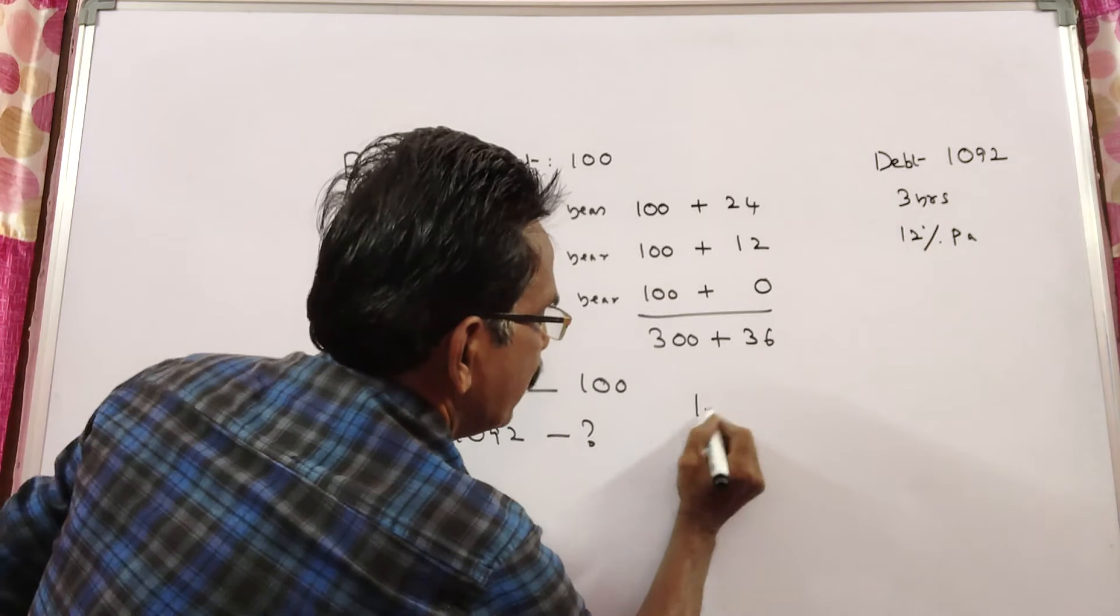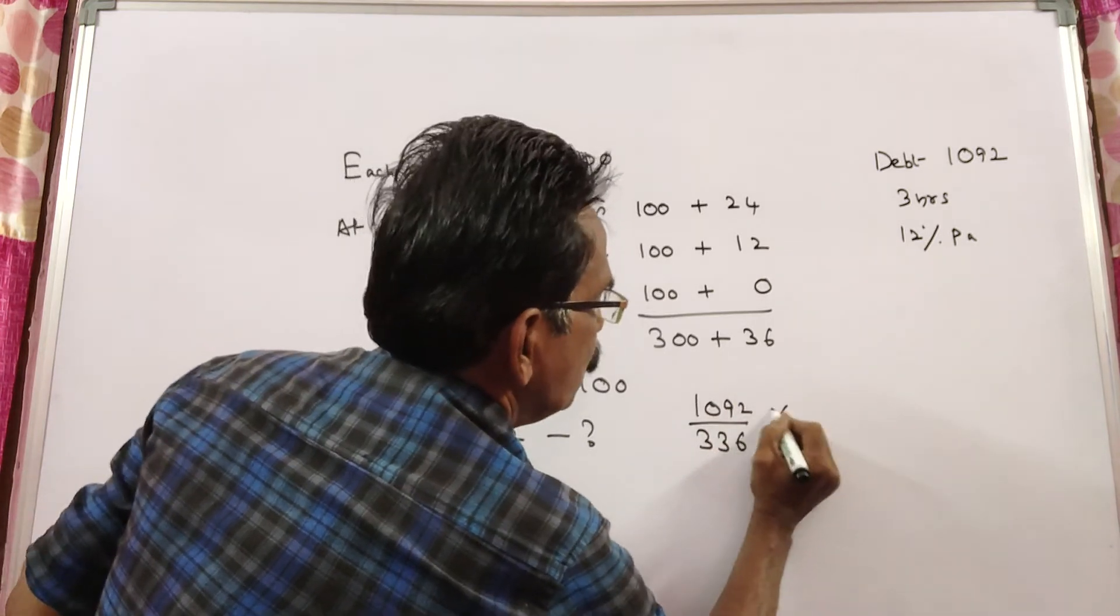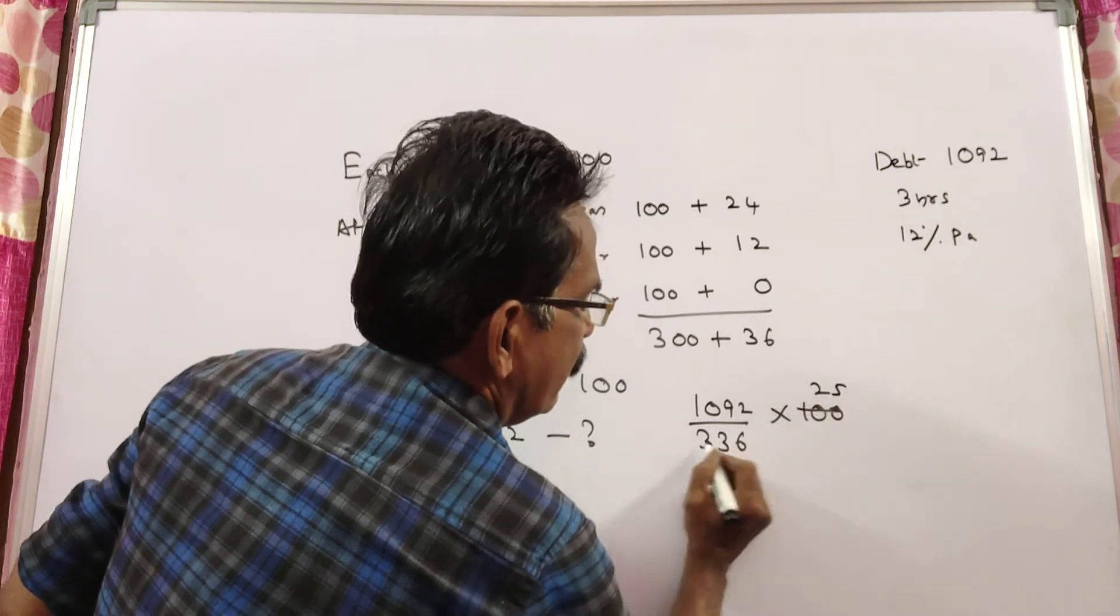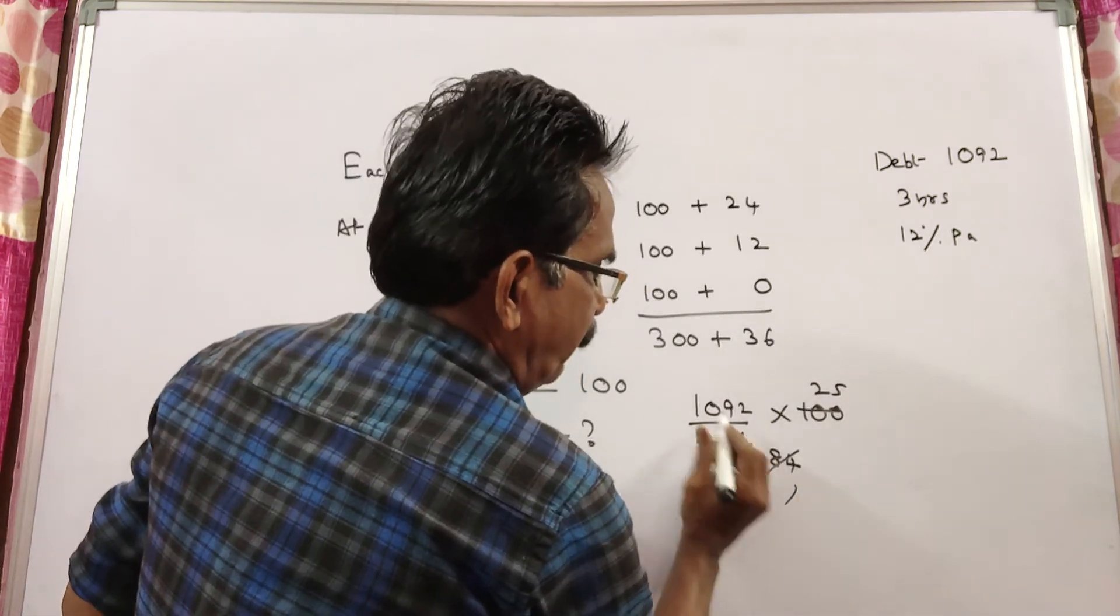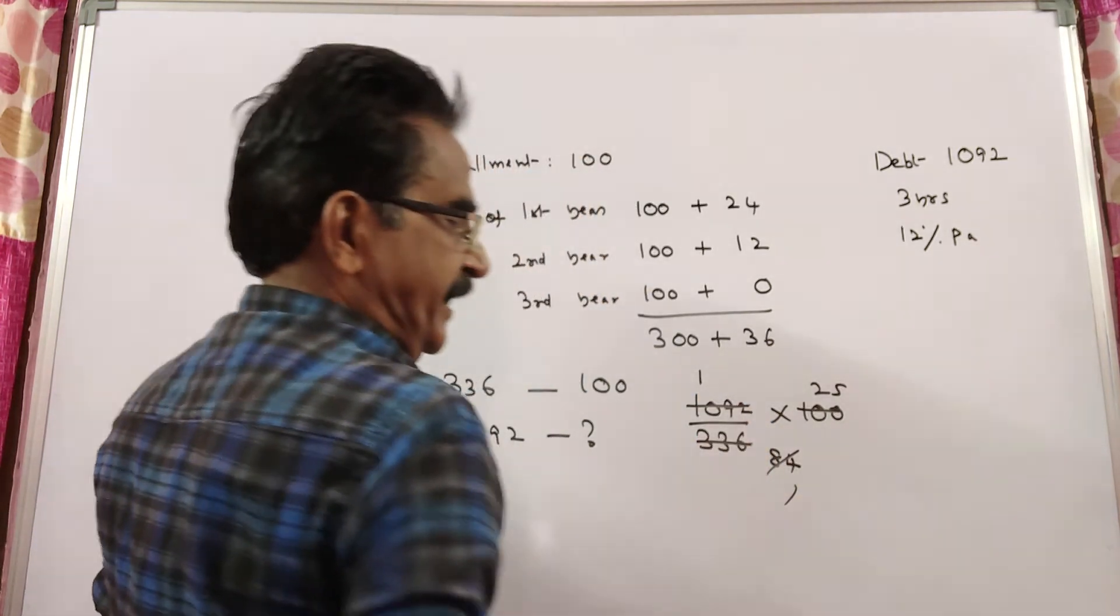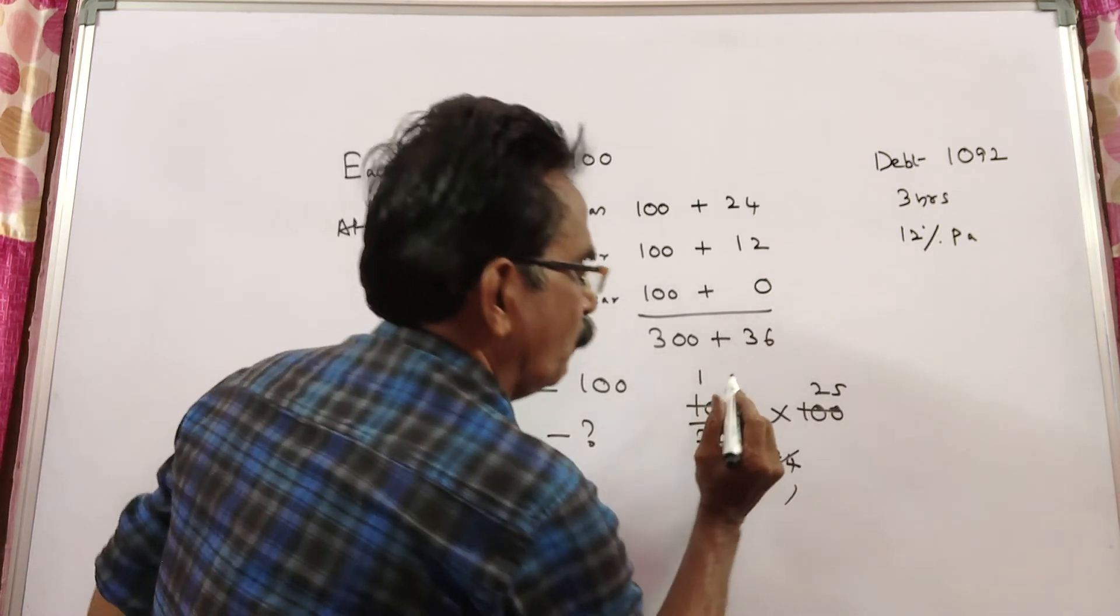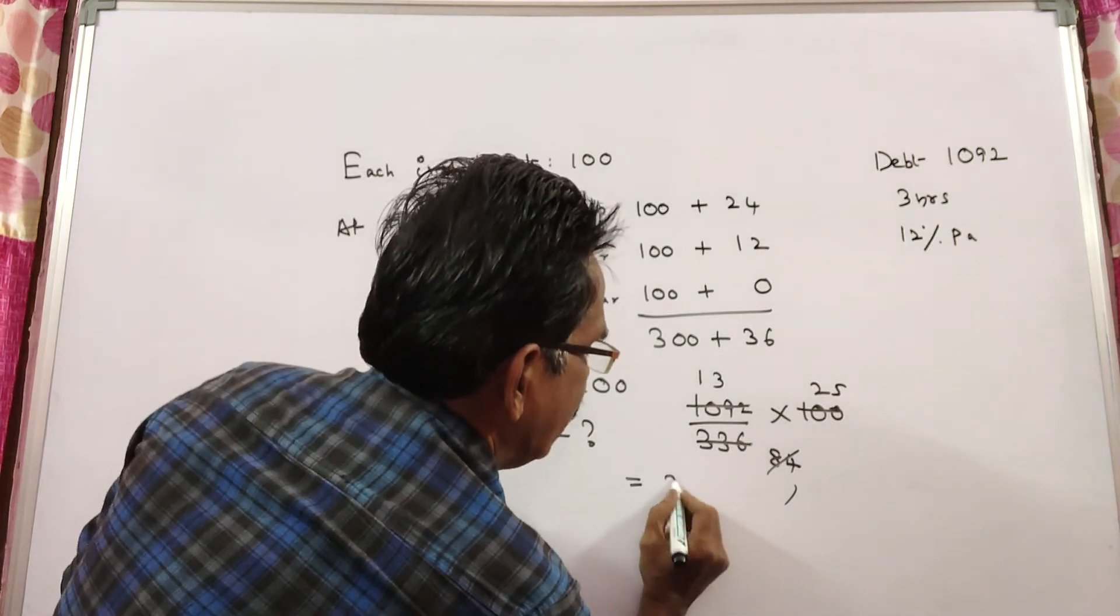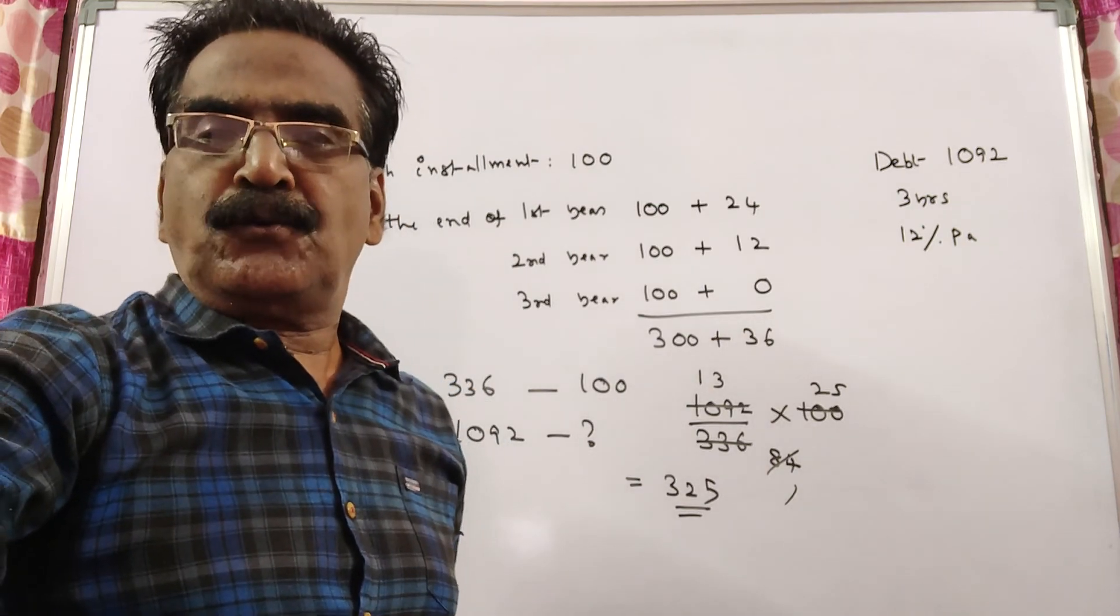Calculating: for 25's, for 8's, for 4's... 84 into 1 is 84. Remaining 16 plus 25 is 252. 84 into 3 is 252. This gives us 325. So 325 is your answer. Thank you.